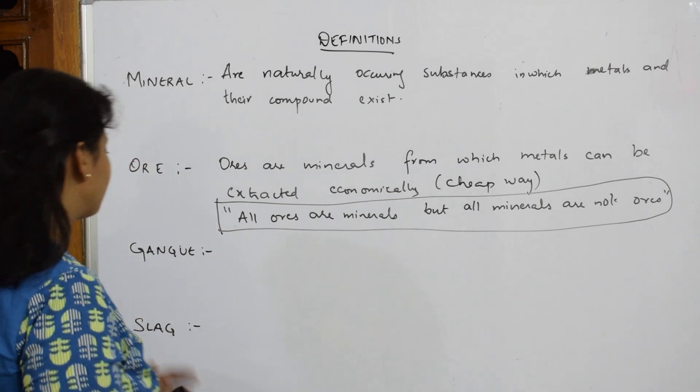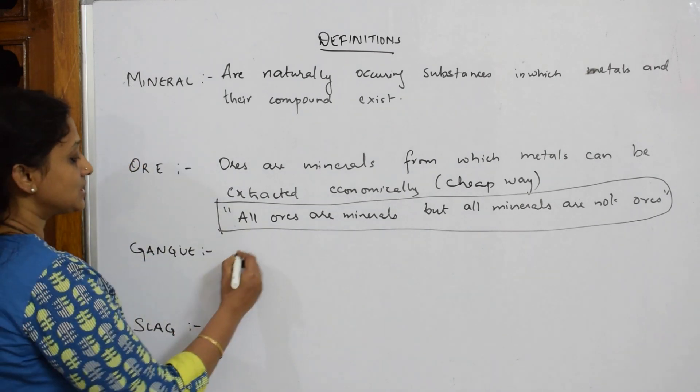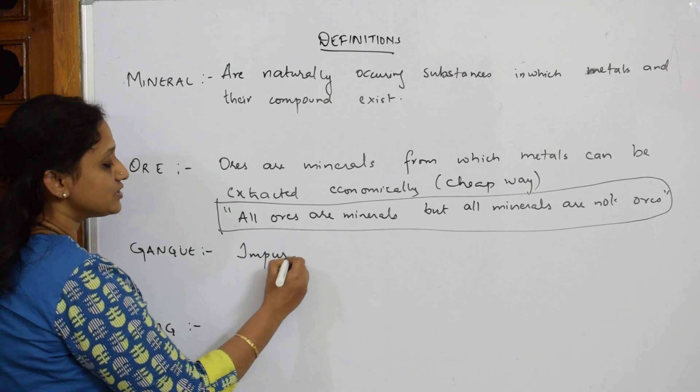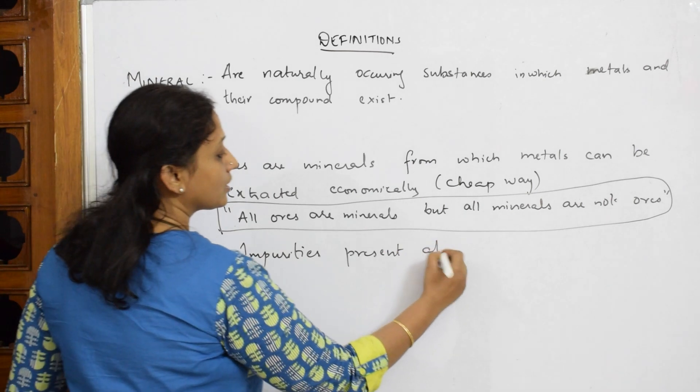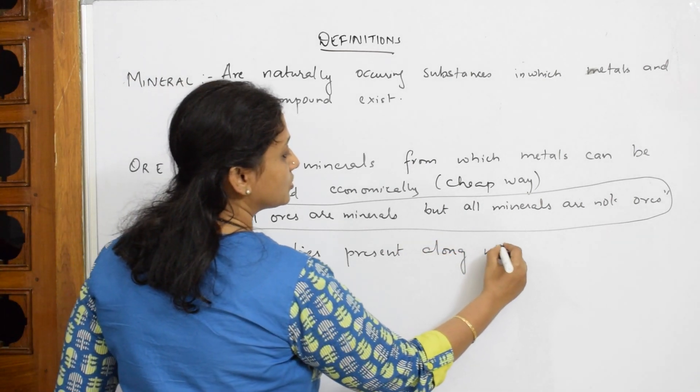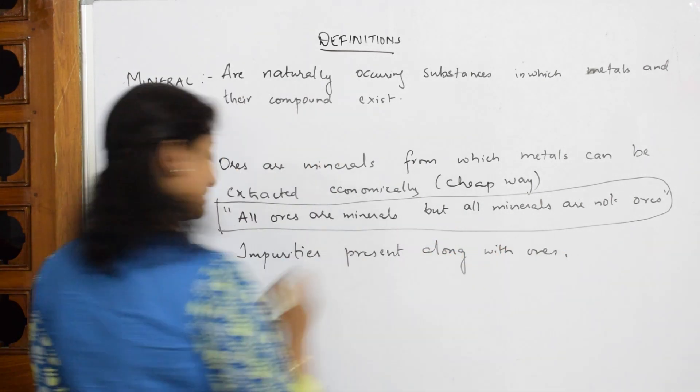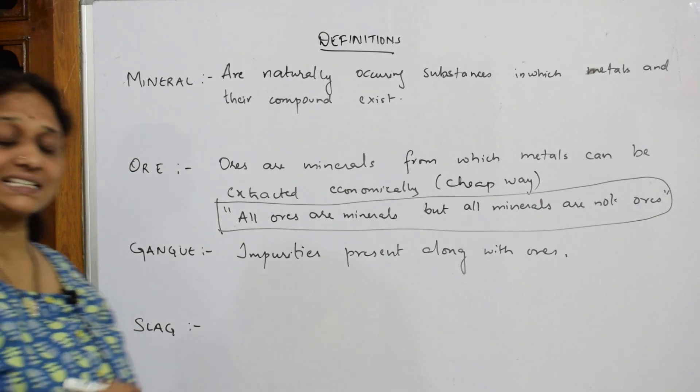Now what is gangue? Gangue are impurities which are present along with the ores. Now what is slag?